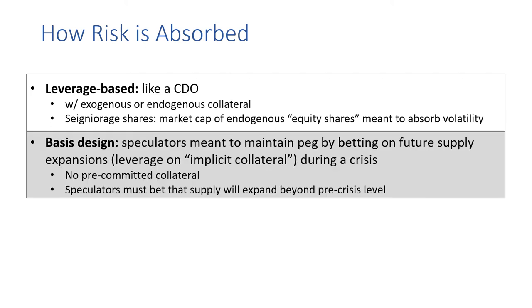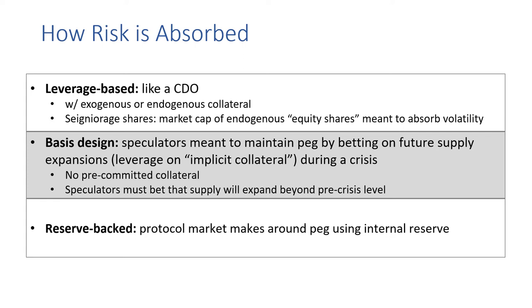Another mechanism is the basis design. Here, speculators are meant to maintain the peg by betting on future supply expansions — which we interpret as leverage on the implicit collateral idea. They have to do this during a crisis, and importantly there is no pre-committed collateral obligation. Speculators must bet that supply will expand beyond pre-crisis levels for the bet to be profitable. There is also a reserve-backed mechanism, where the protocol essentially market-makes around the peg using an internal asset reserve. Various types of meta stablecoins include combinations of all of these mechanisms.